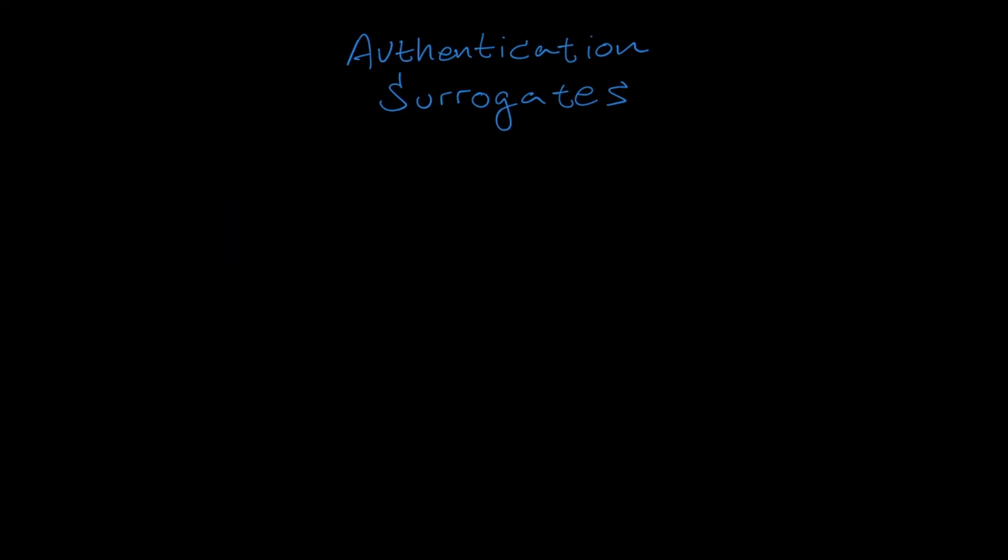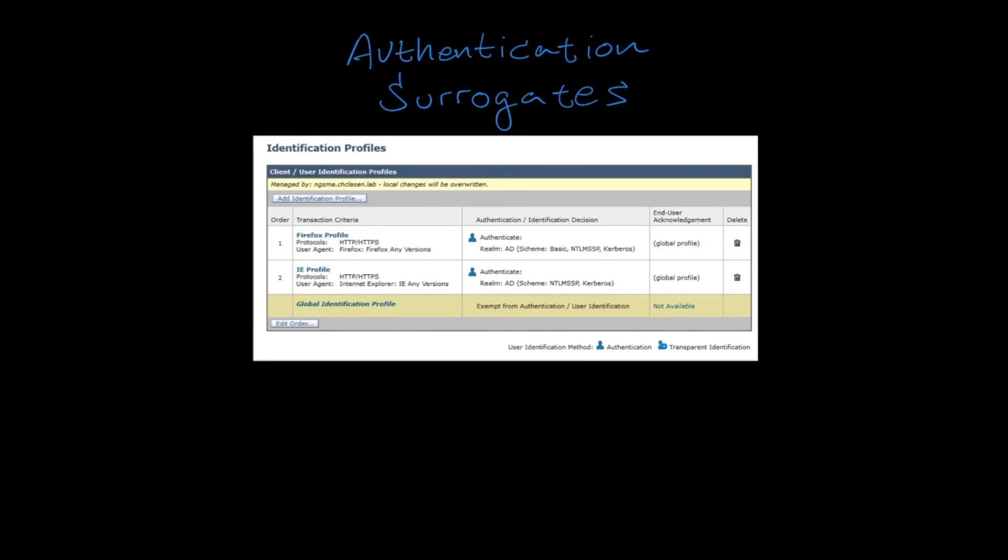I'd like to outline another very specific scenario that can be confusing when using a mix of surrogate types in the identification profiles. Consider a scenario where there are two identification profiles configured that use different surrogate types.